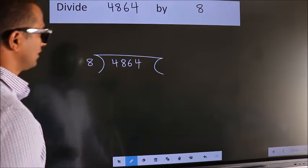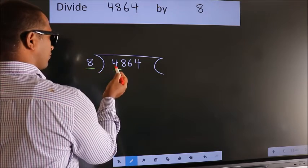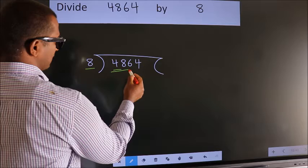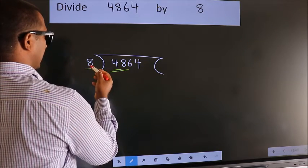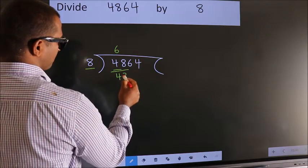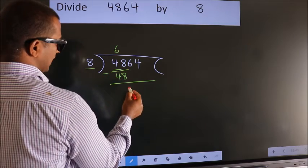Next, here we have 4. Here 8. 4 smaller than 8, so we should take 2 numbers, 48. When do we get 48? In 8 table. 8 times 6 is 48. Now we should subtract. We get 0.